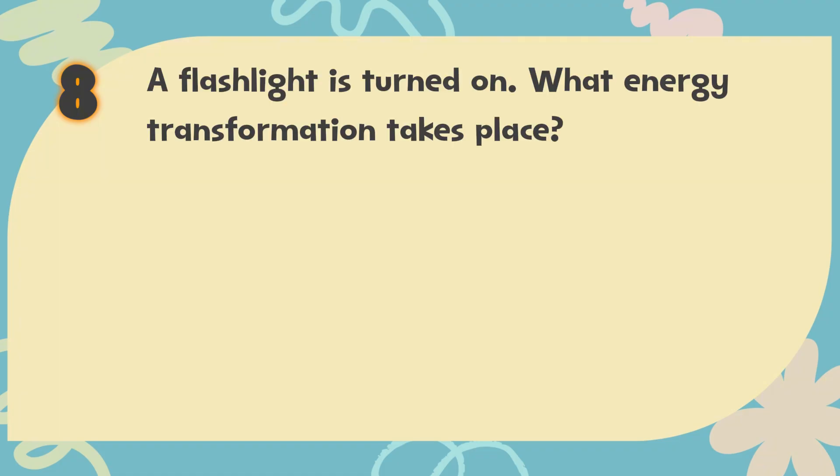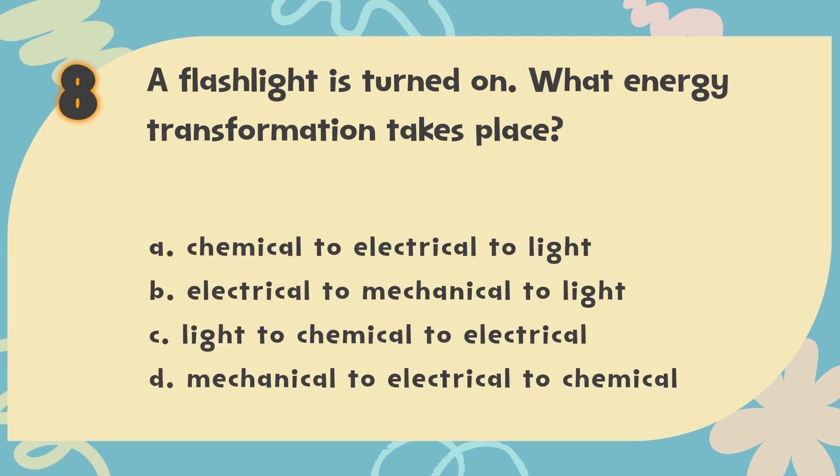Number 8. A flashlight is turned on. What energy transformation takes place? The choices are: A. Chemical to electrical to light, B. Electrical to mechanical to light, C. Light to chemical to electrical, D. Mechanical to electrical to chemical.